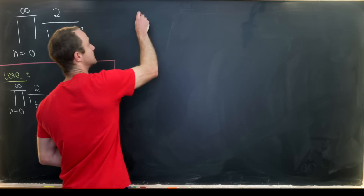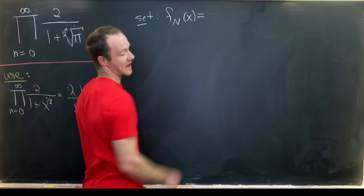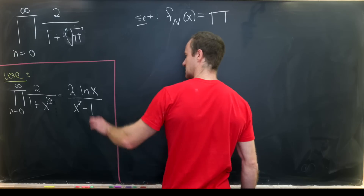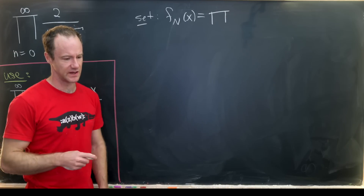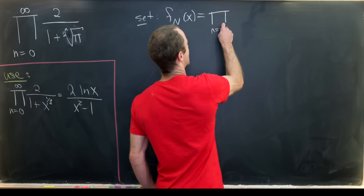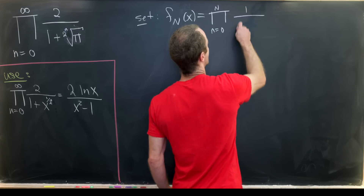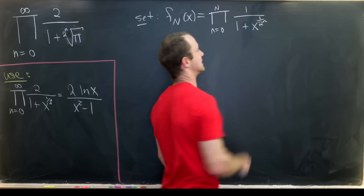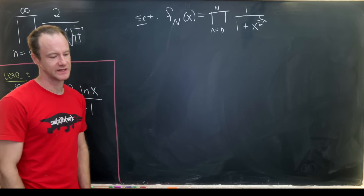So let's get to it. Let's set f sub capital N of x equal to this partial product — it's not quite the entire partial product but enough to get a feel for what's going on. This is going to be the product as n goes from zero up to N of one over one plus x to the one over two to the n. It's missing the factor of two, but we'll take care of that when we get to it.